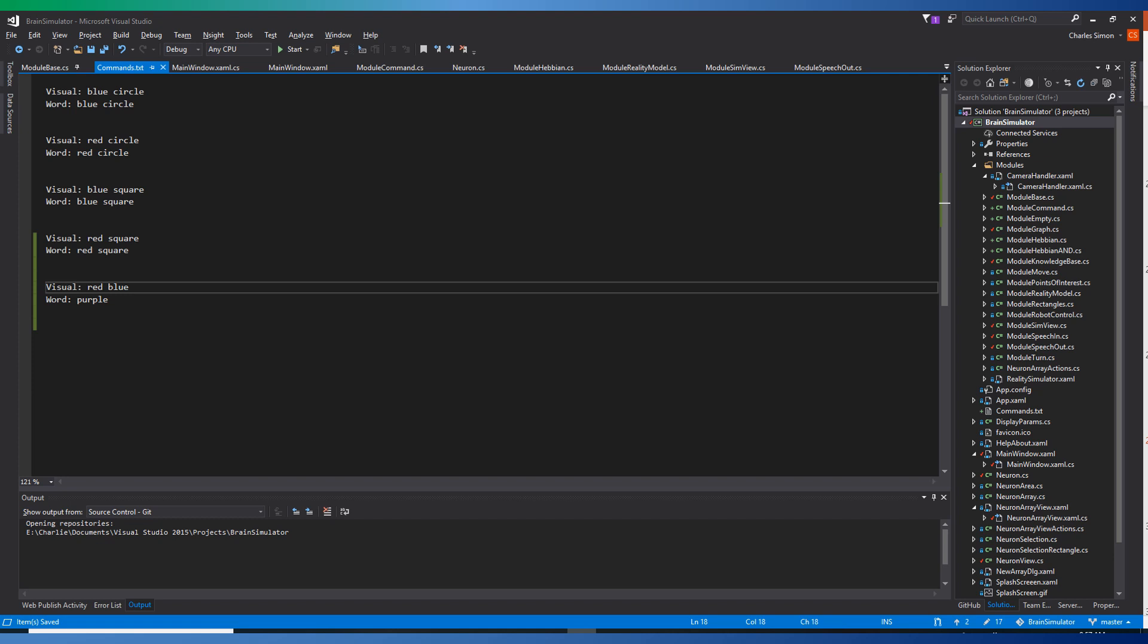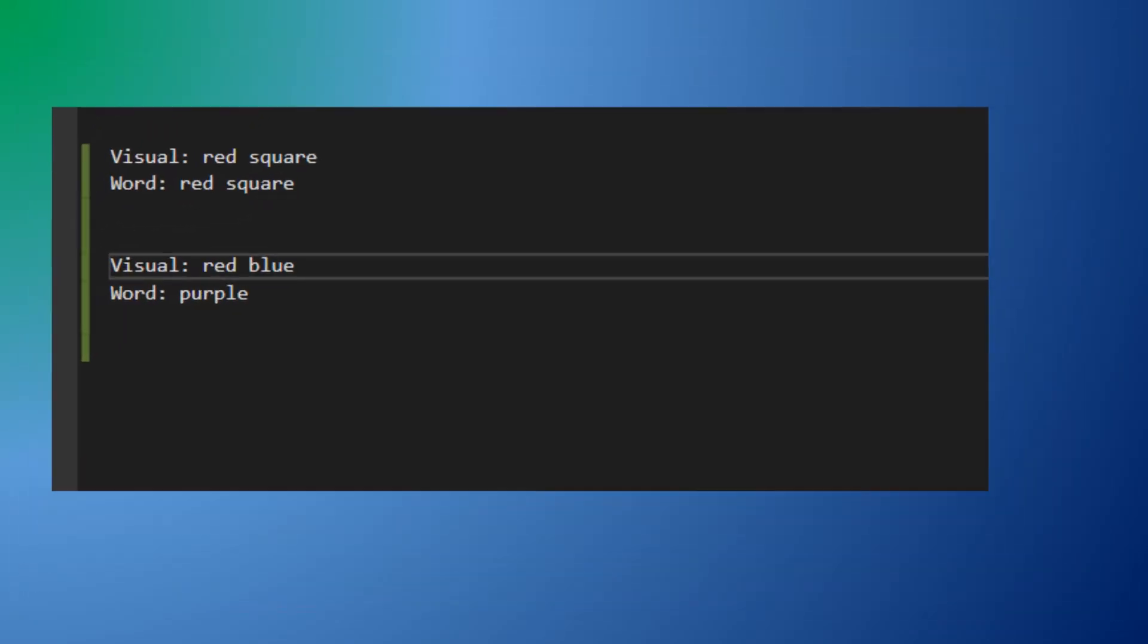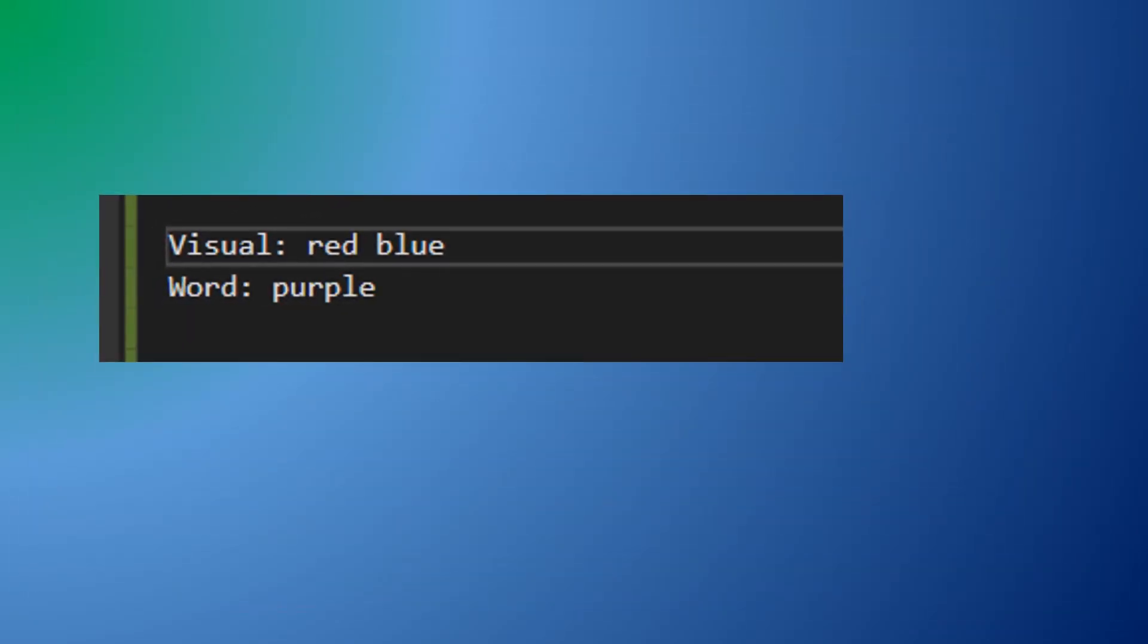The model so far can create one-to-one relationships, but what about many-to-one? As an example, what about red and blue simultaneous visual inputs representing a unique word purple?